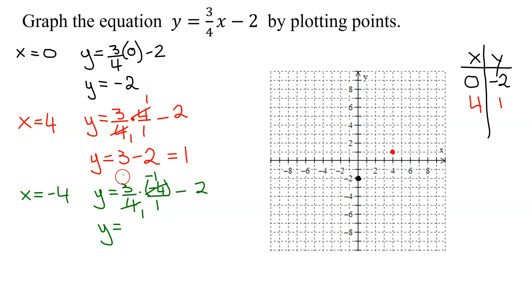So y equals 4 reduces with this negative 4, negative 1 time. So I'm going to get 3 times negative 1, which is negative 3 over 1, which is negative 3 minus 2. And so y is going to equal negative 5.